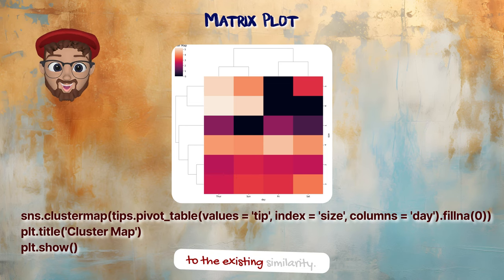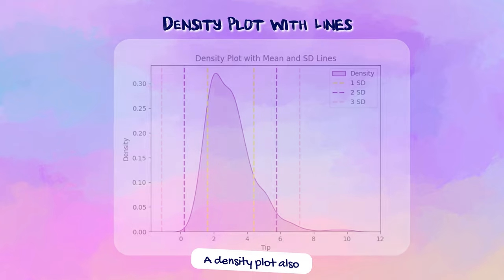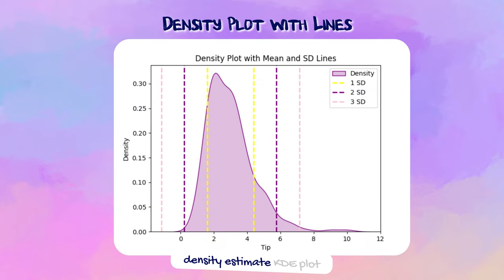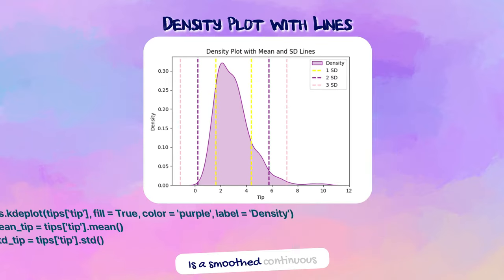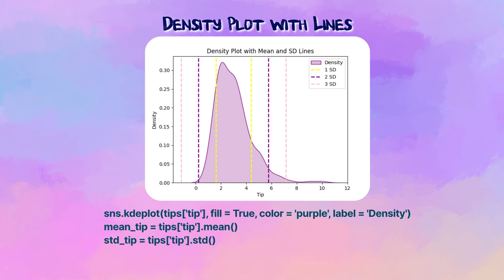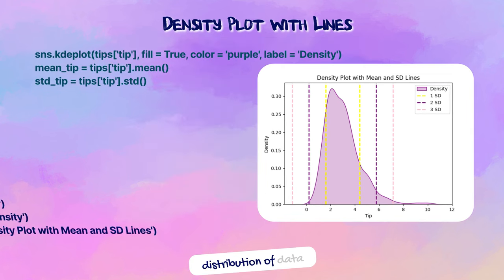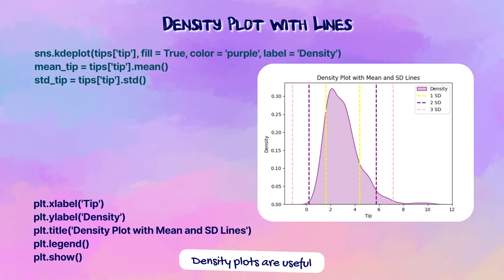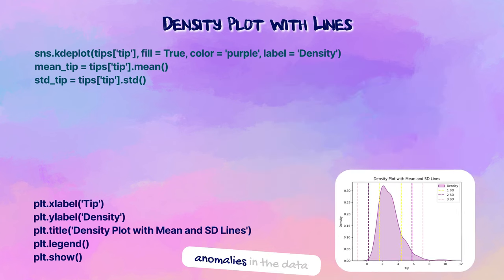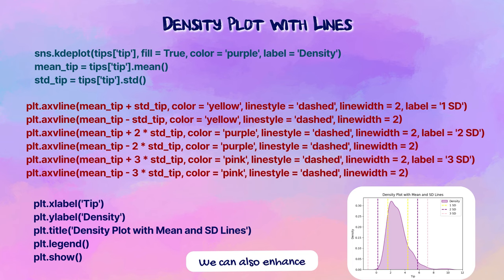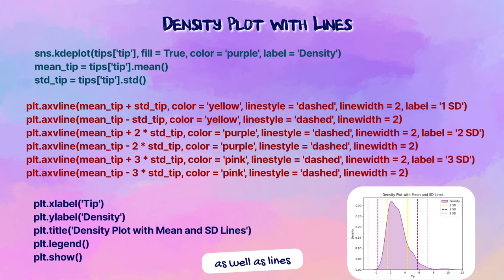A density plot, also known as a kernel density estimate or KDE plot, is a smoothed, continuous version of a histogram. It estimates the probability density function of a continuous variable, providing a way to visualize the distribution of data. Density plots are useful for understanding the distribution and identifying patterns or anomalies. We can enhance this plot by adding lines representing standard deviations, as well as lines for mean and median.